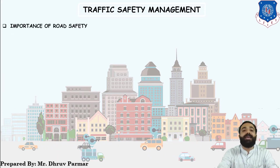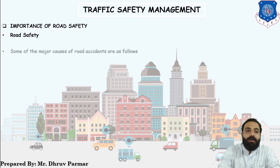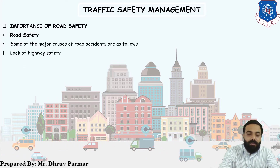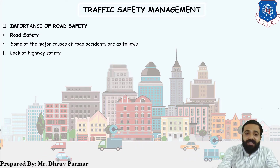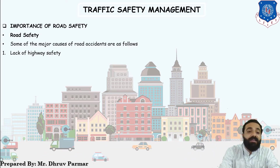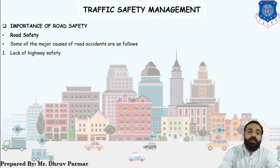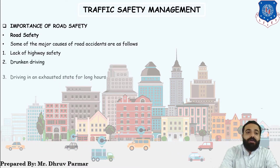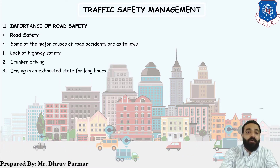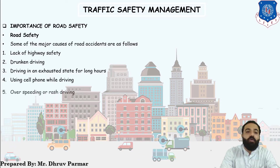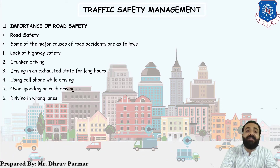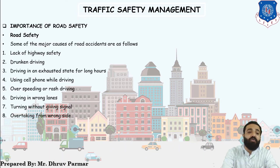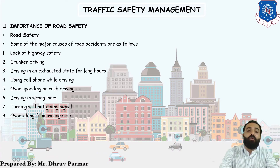Regarding the importance of road safety, there are some major causes of road accidents: lack of highway safety, no proper safety provisions on highways, drunk driving, driving in an exhausted state for long hours, using a cell phone while driving, over-speeding or rash driving, driving in the wrong lane, turning without giving a signal, and overtaking from the wrong side. These eight reasons are major causes of accidents.